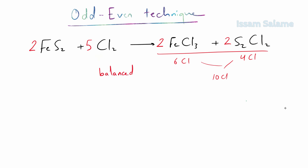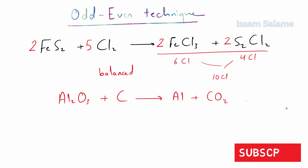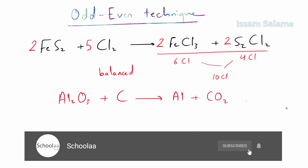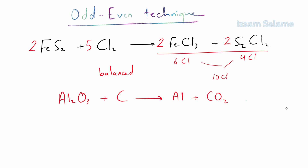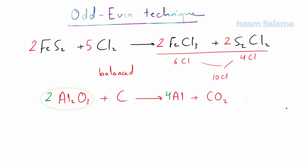Another example: the reaction of aluminum oxide with carbon to produce aluminum and carbon dioxide. The number of oxygen atoms on the left is odd while on the right it is even, so we multiply the left side by 2. We then balance the aluminum atoms by multiplying the right side by 4. On the left side we now have six oxygen atoms, so multiply the carbon dioxide on the right by 3 to balance oxygen. Finally, balance the carbon atoms by multiplying carbon on the left by 3, and the reaction is balanced.